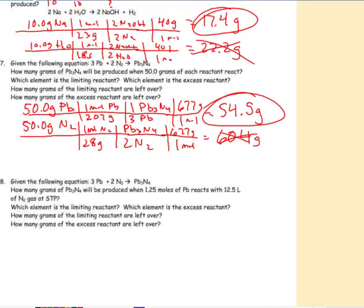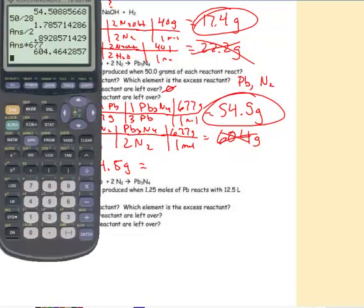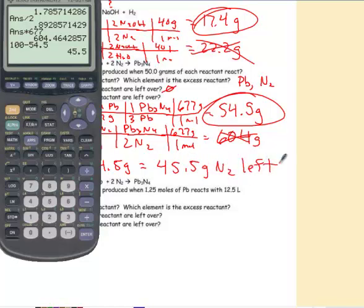All right, well then, let's answer the rest of the questions. Which element is going to be the limiting? Well, the limiting will be the one that runs out. So, lead, Pb, is the limiting, which makes N₂ the excess. How many grams of the limiting are left over? By definition, there are 0 grams of the limiting, meaning all 50 grams of the lead right here are gone. So, the question then is, how many grams of the nitrogen are left over?